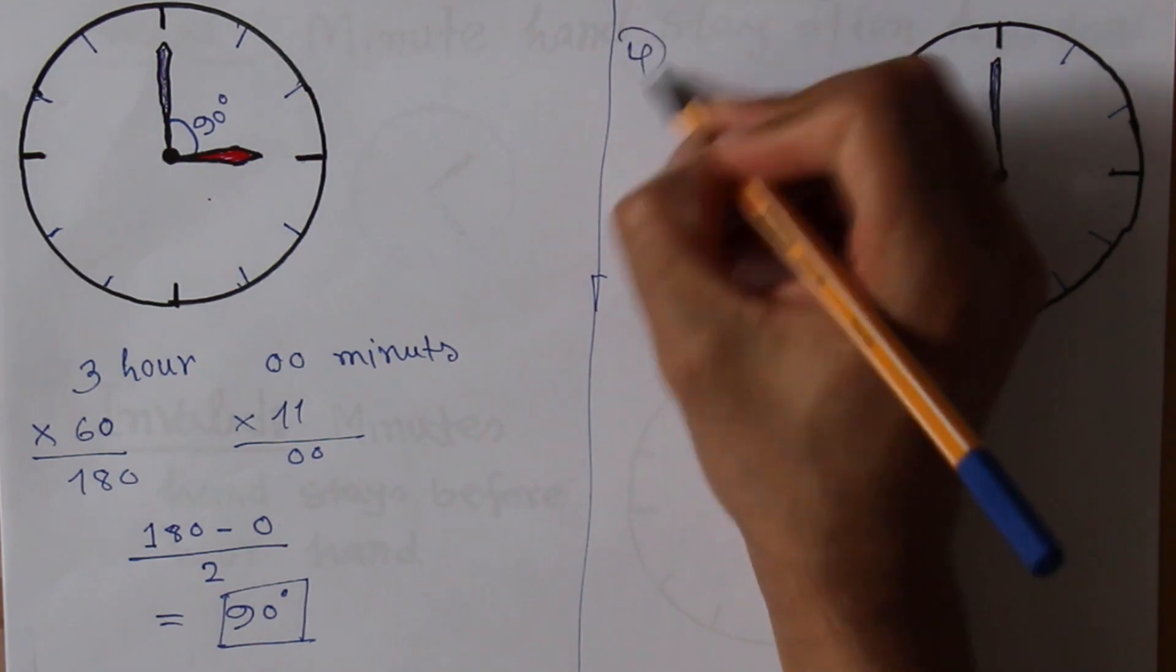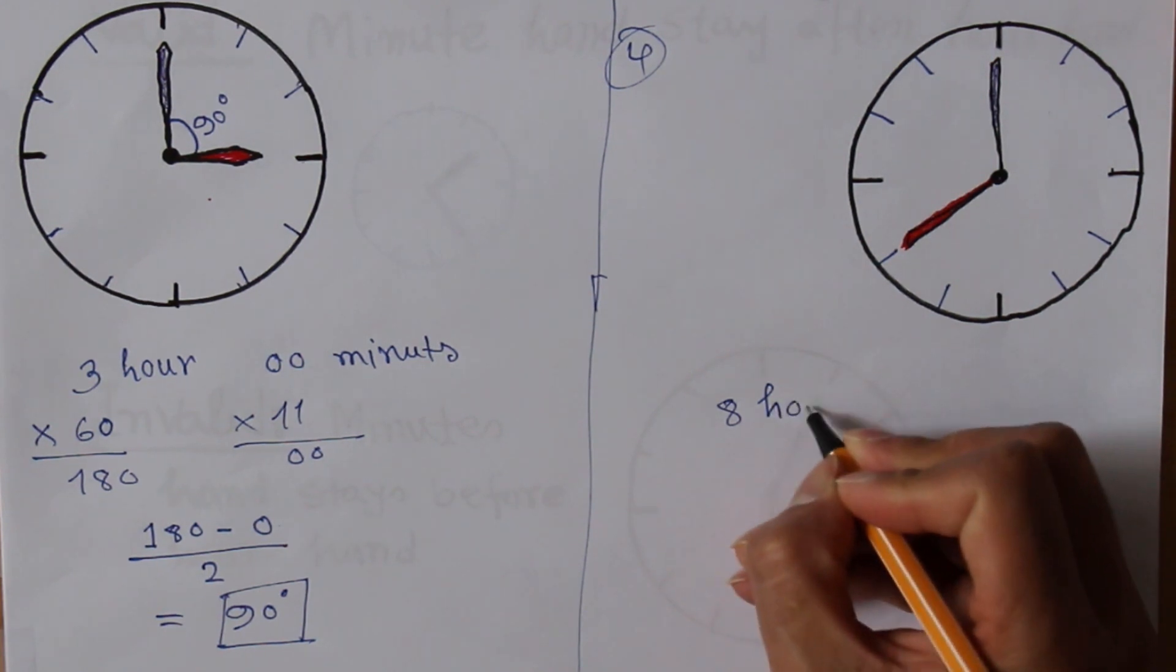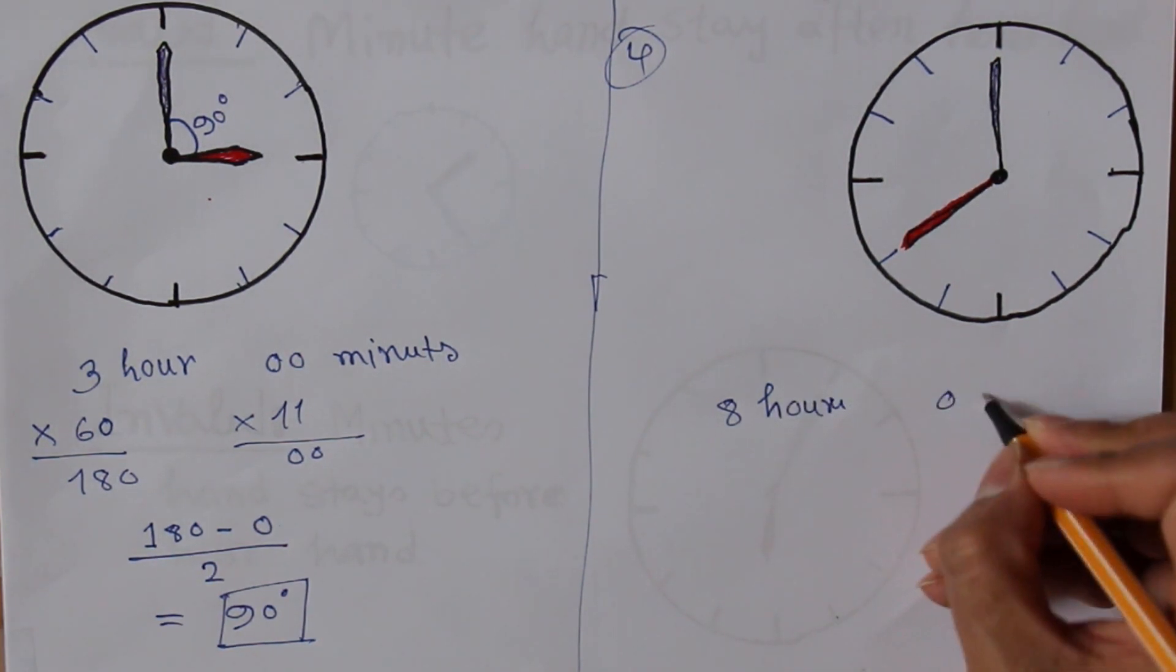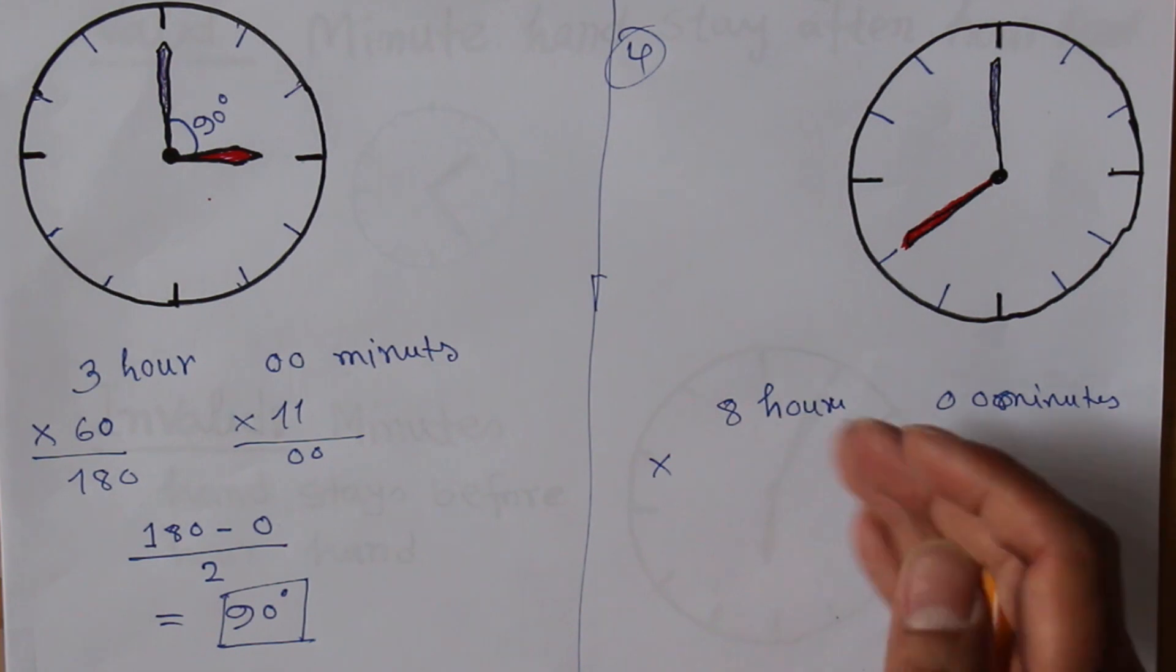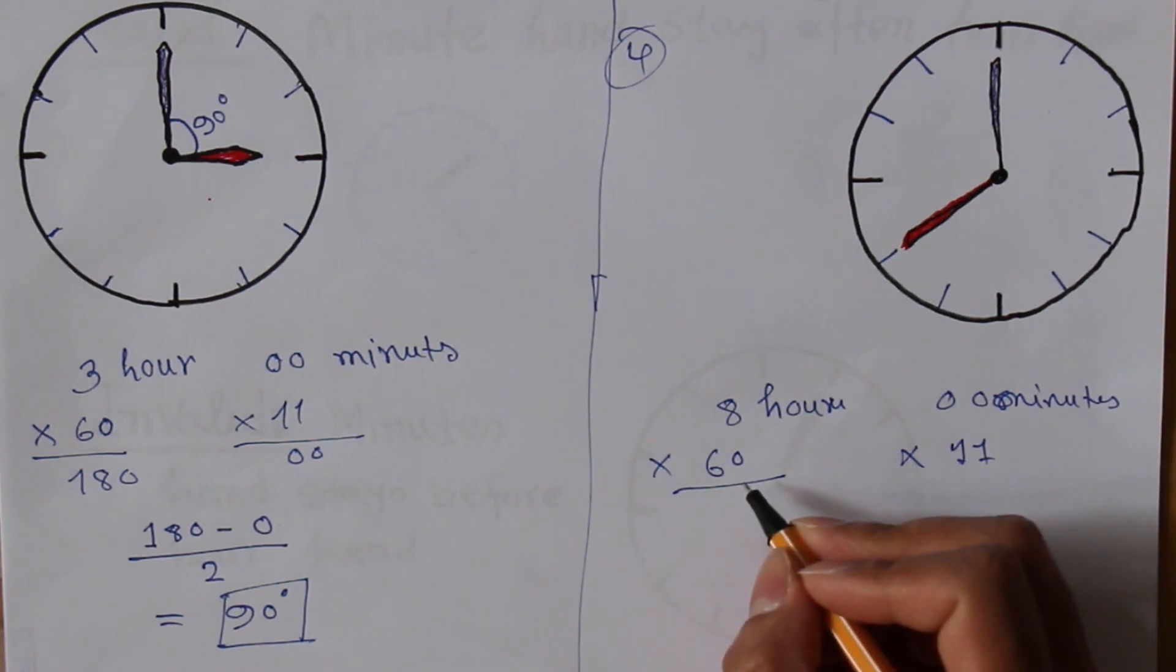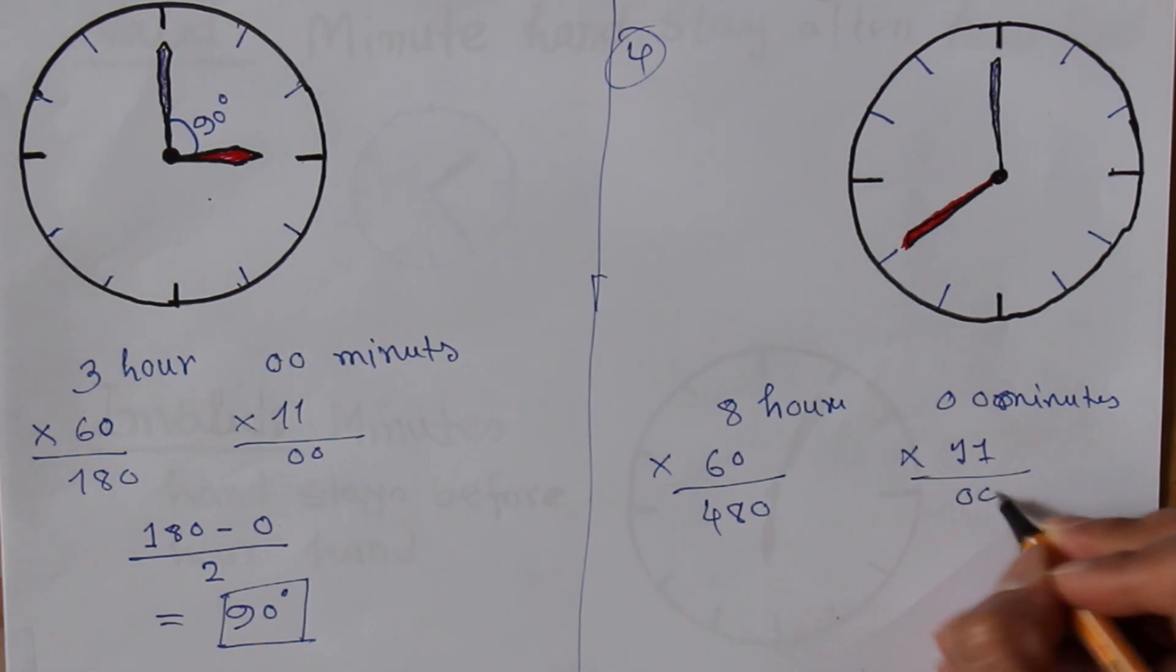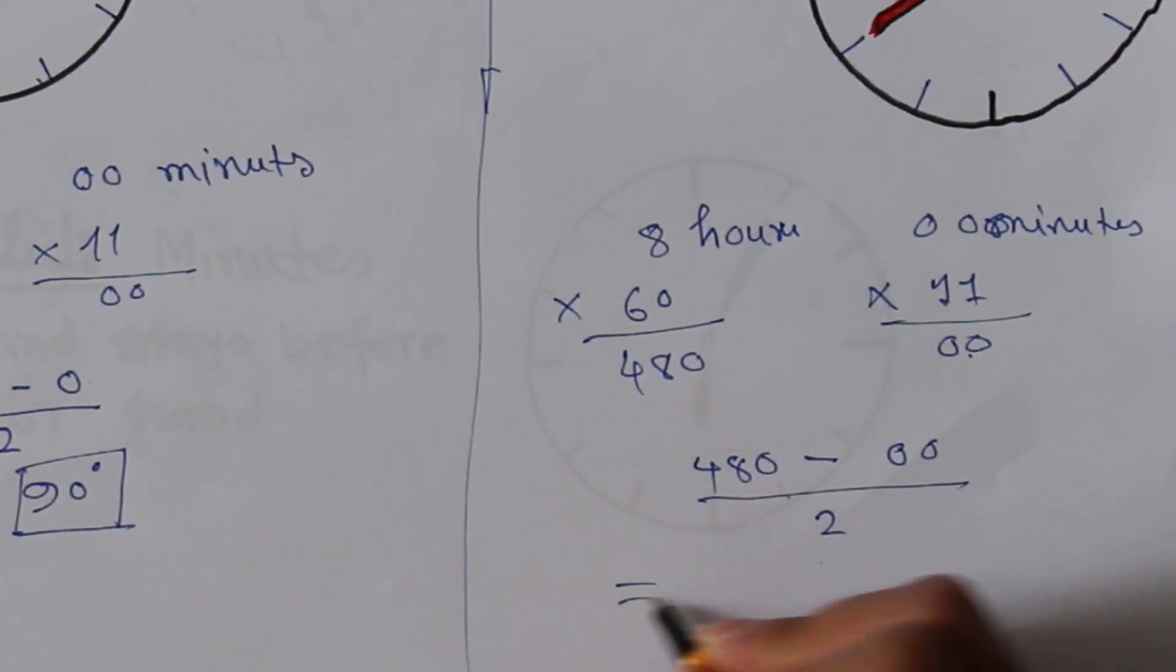Let's see case number 4. This clock is showing 8 o'clock exactly, 8 hours and 00 minutes. According to our trick, multiply the hour by 60 and the minutes by 11. 60 times 8 is 480 and 11 times 0 is 0. Subtract the smaller from the bigger: 480 minus 0 divided by 2, which equals 240 degrees.